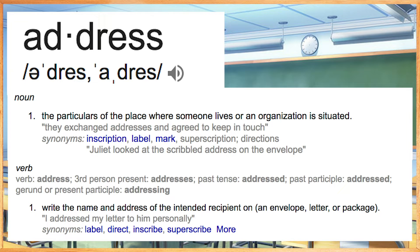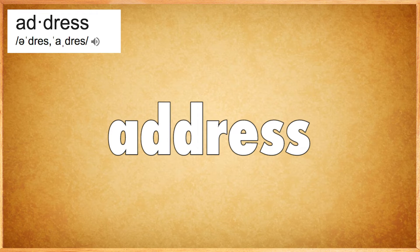Focusing on the meanings: as a noun, 'address' is the specific place where someone lives or where a business is located — and this is what Denise is asking about, the pronunciation of the noun. The verb, on the other hand, indicates the action of writing the name or address of a recipient on an envelope, a letter, or package — something that you are sending to someone or some place.